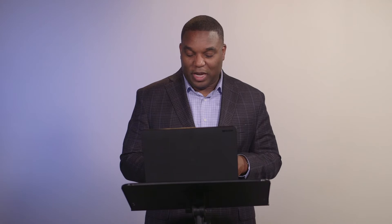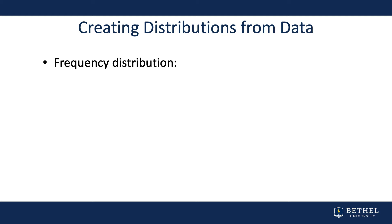One way to display data once you have it is a frequency distribution. It is simply a summary of the data showing the number of observations in each of several non-overlapping classes, which we call bins. You're familiar with bins and frequency distributions when you think about getting a grade. A teacher may say to the class: you took a test and I've got four A's, six B's, two C's, and two D's. The teacher just gave you a frequency distribution of the grades for the entire class.